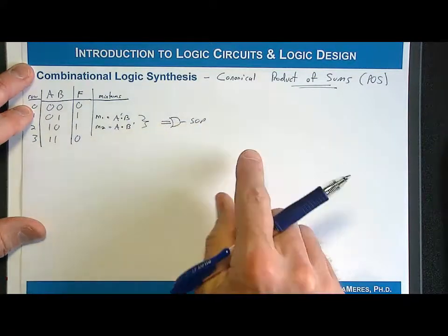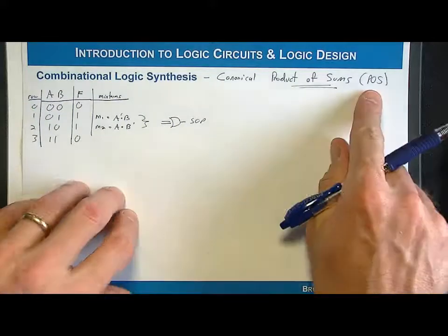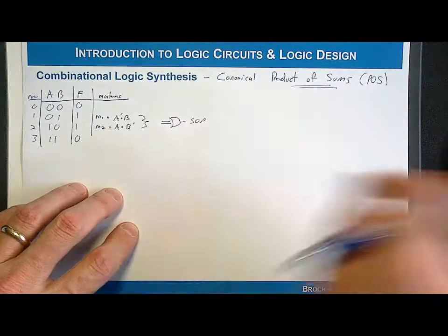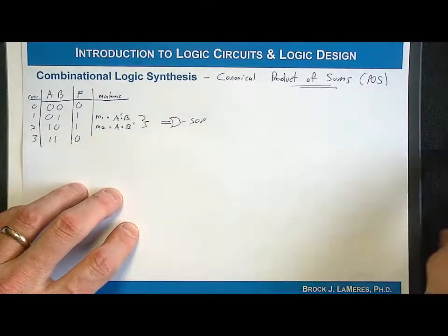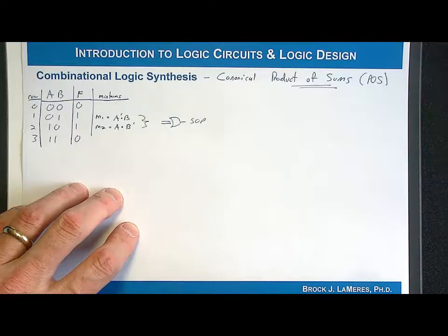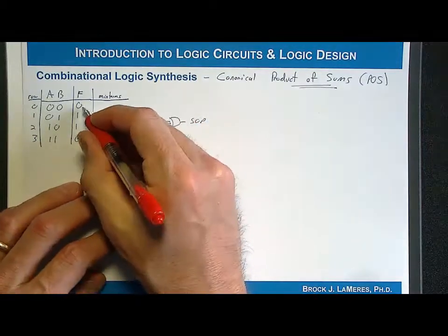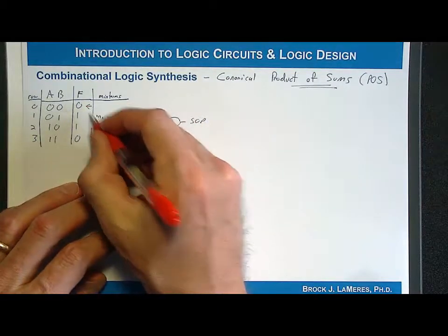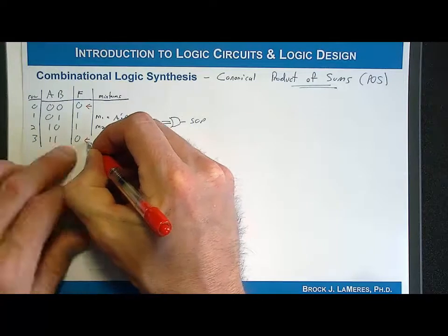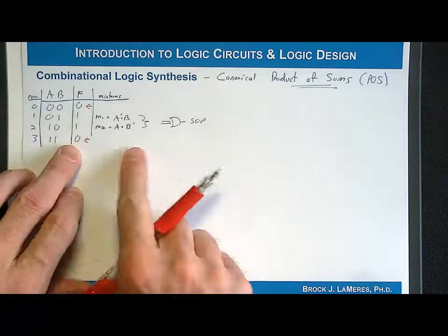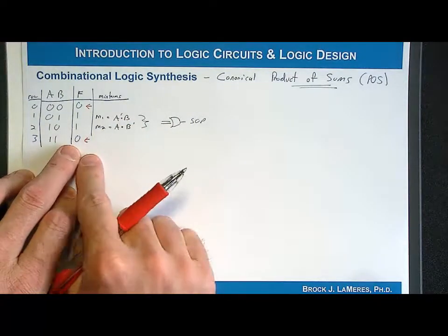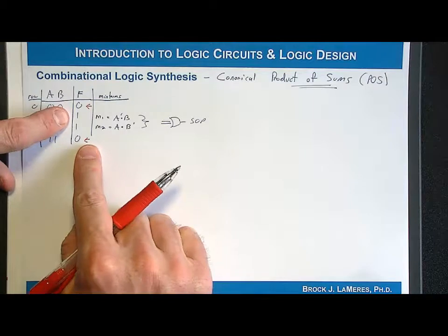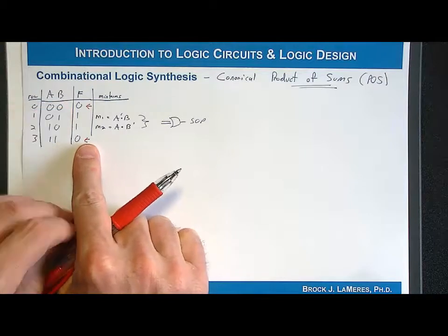When we go to a product of sums, we are going to use the dual of this approach. What we are going to do is create circuits which produce the zeros. We're going to look at trying to create the zeros, and then by default if we don't do anything, we'll have ones.